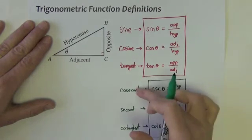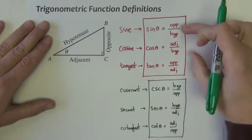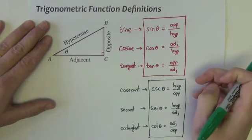So here's your three new ones: cosecant, secant, cotangent. They are just sine, cosine, and tangent's reciprocals, respectively.